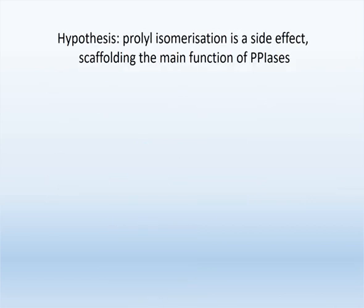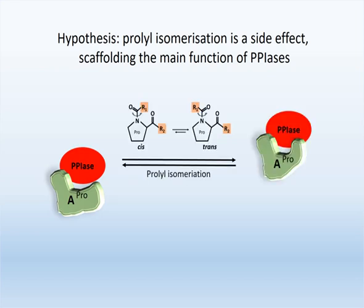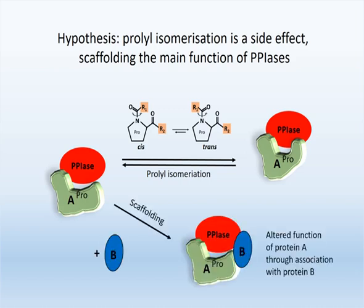Therefore, the hypothesis is put forward that PPIases interact with proline-containing protein domains. In some cases, this interaction lowers the activation energy for the transition between the cis- and trans-configuration of proline bonds. This, however, is a side effect of protein binding. The main effect of PPIases is promoting the interaction of other proteins through scaffolding, thereby changing their function.